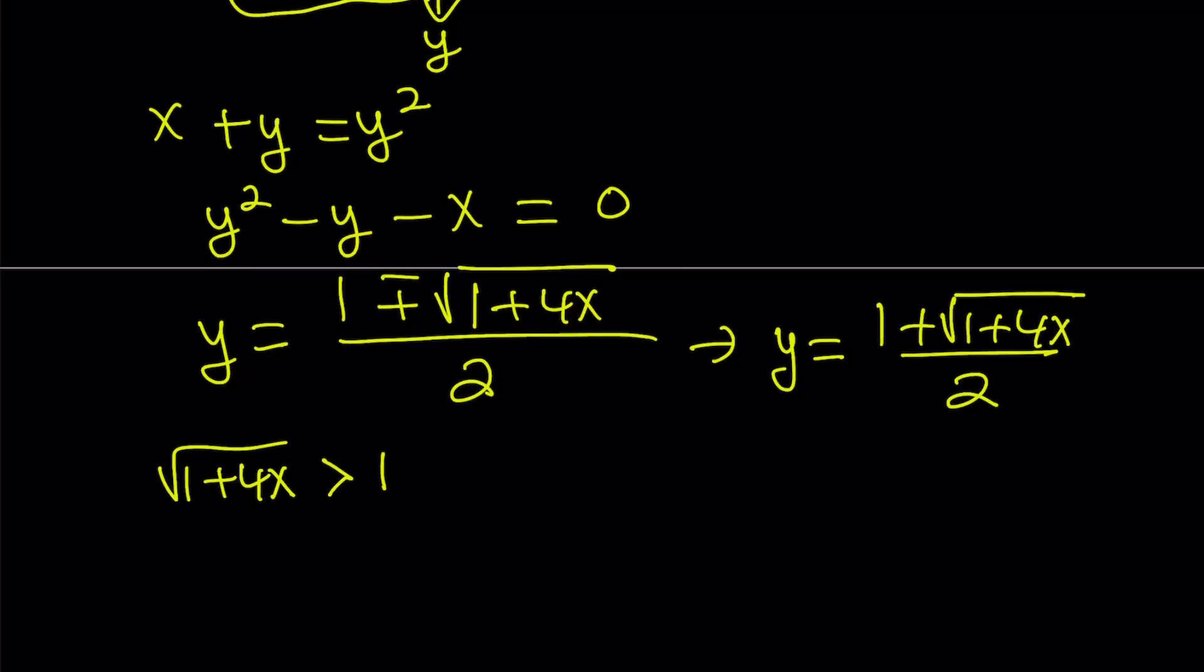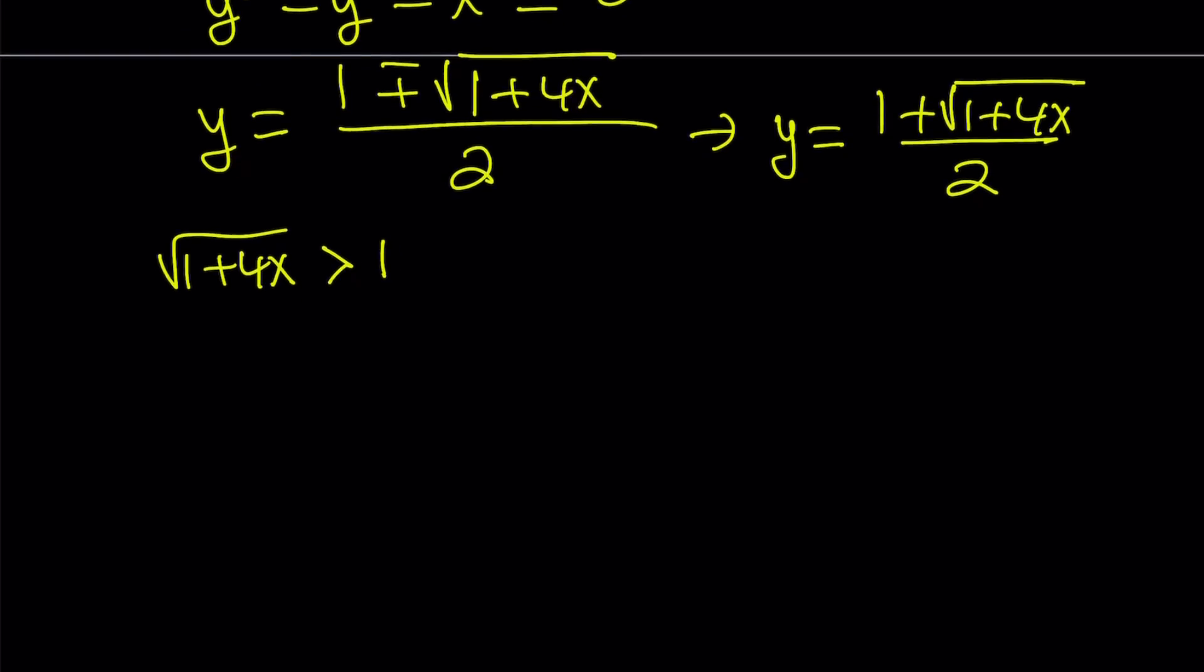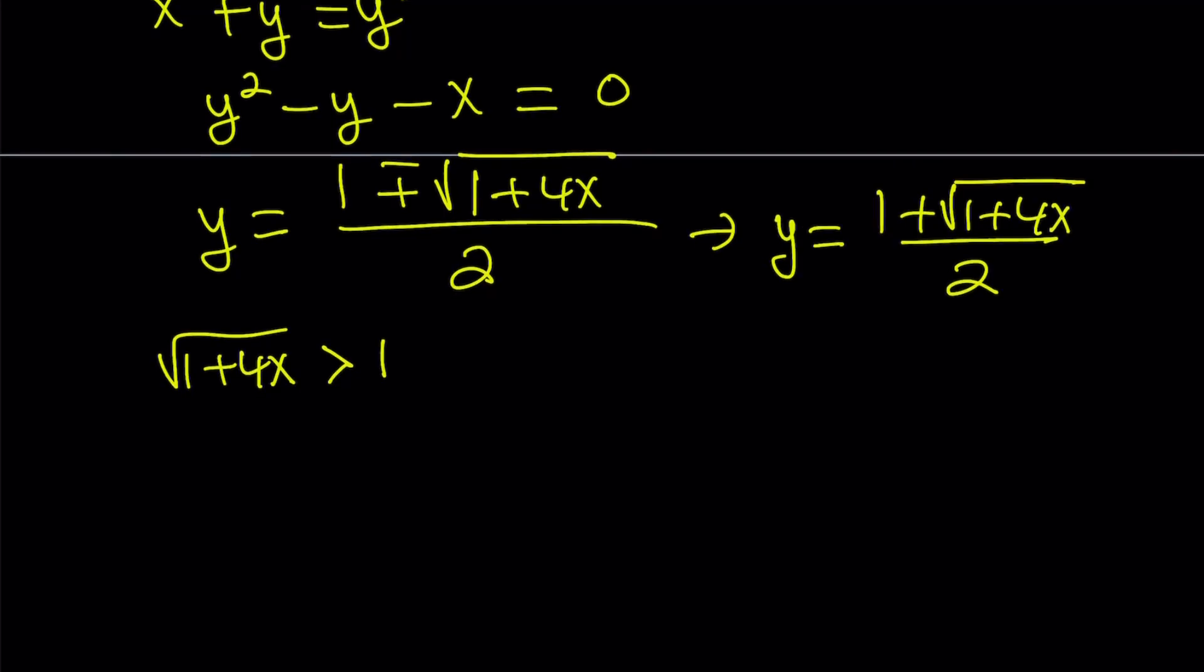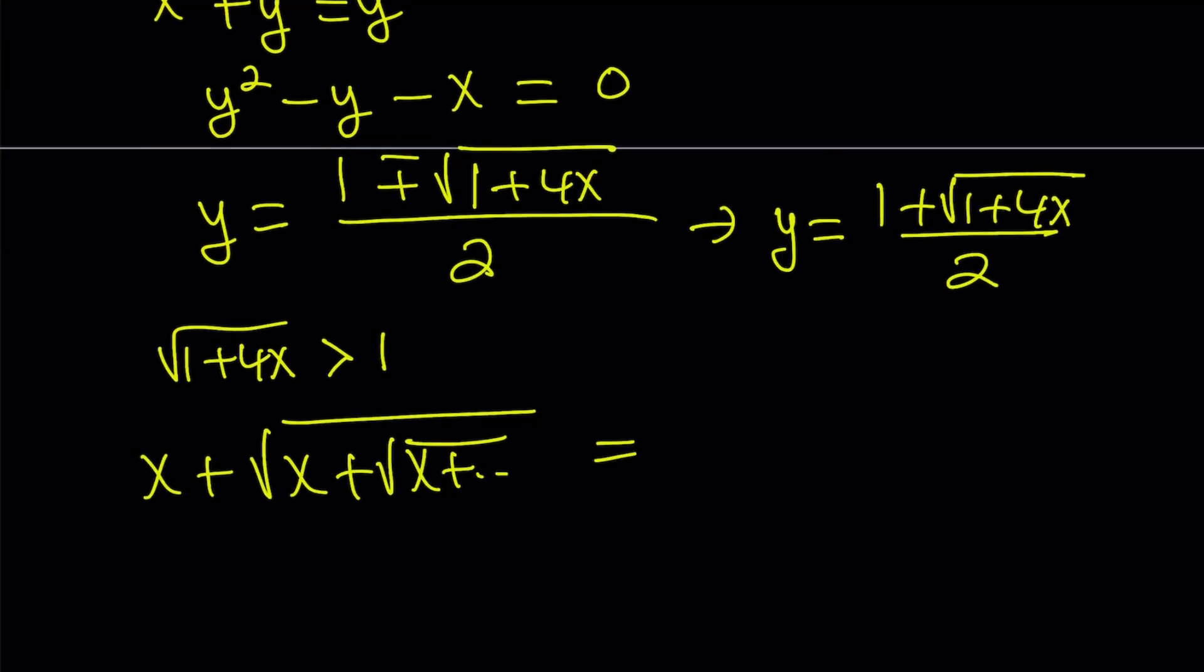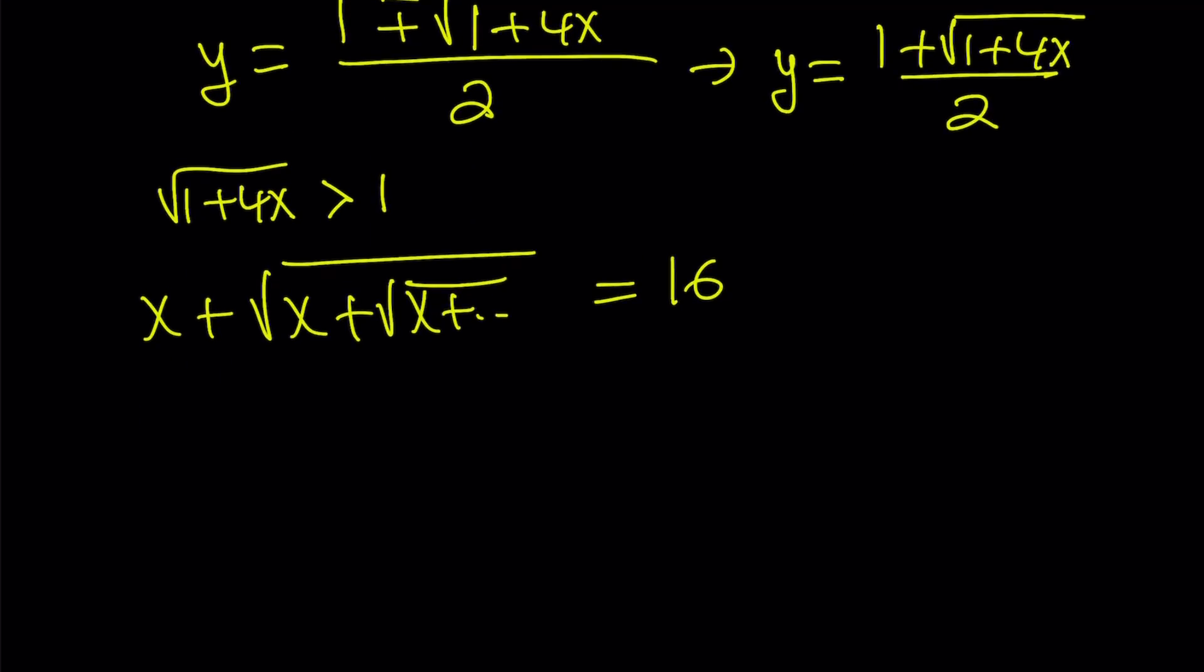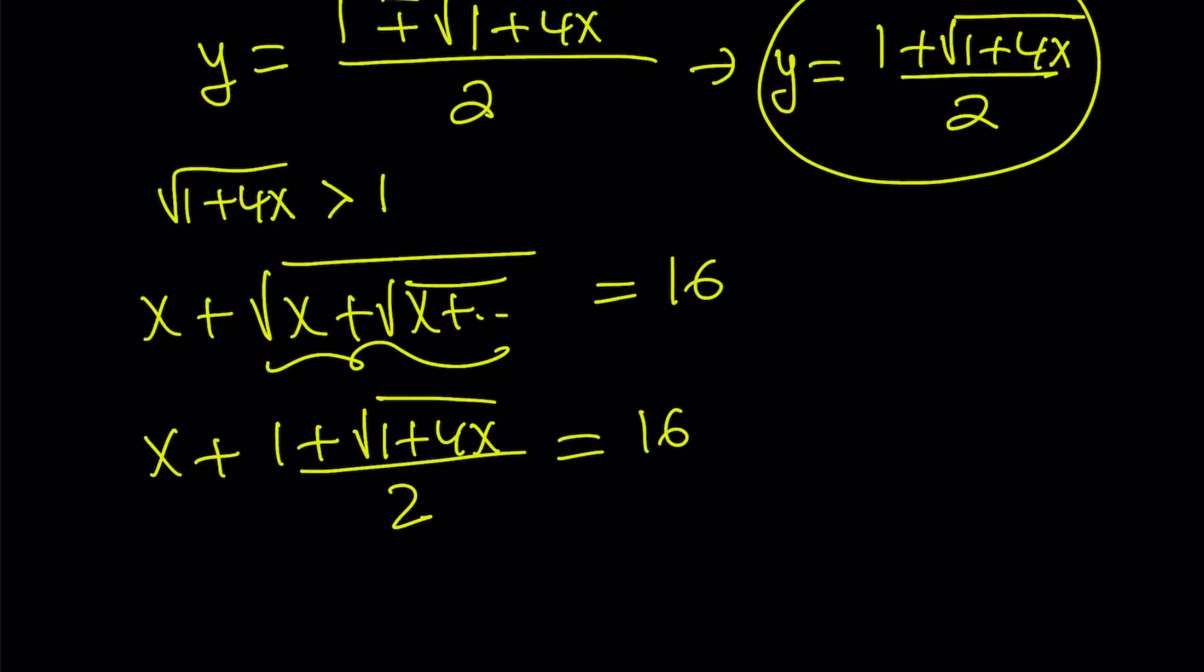Now we know that y equals that. We have our expression. Let's take a look at our expression one more time. We have x plus the square root of x plus the square root of x plus dot dot dot equals 16. Now we know that this part is equal to this radical expression, so we can write it as x plus the quantity 1 plus the square root of 1 plus 4x all over 2 equals 16.